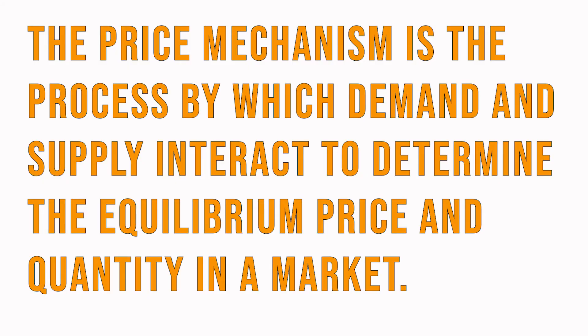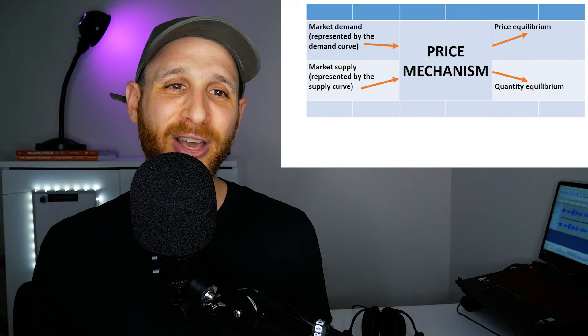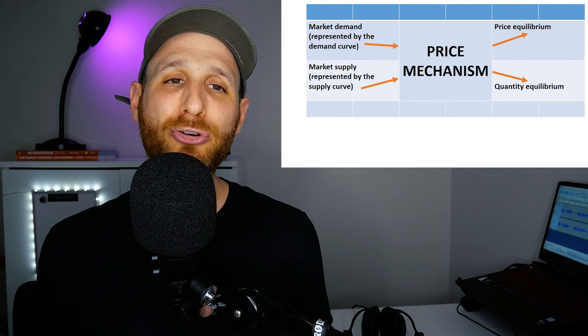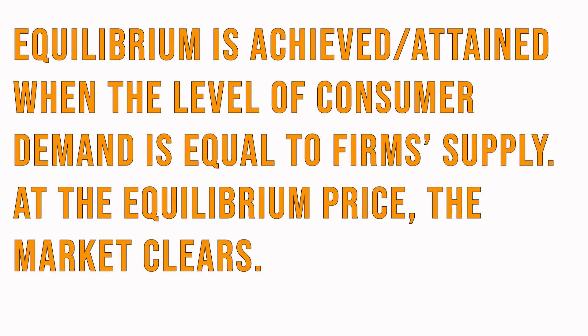The price mechanism is the process by which demand and supply interact to determine market price and market quantity. Demand and supply operating in this market intersect, and then we get equilibrium price and equilibrium quantity — that is the idea of the price mechanism. The interaction of demand and supply creates that equilibrium price and equilibrium quantity. A more formal definition: equilibrium is achieved when consumer demand equals firms' supply.